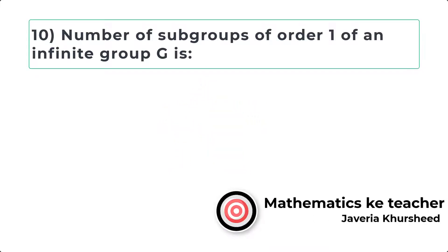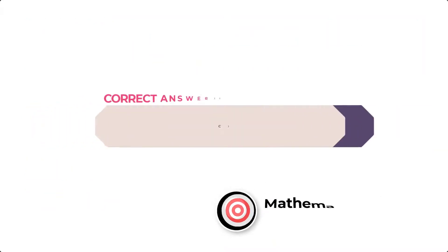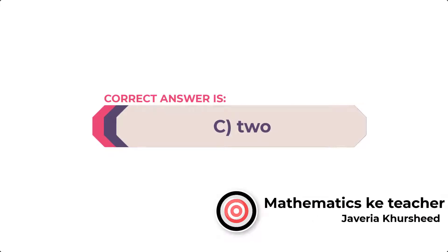Question 10: Number of subgroups of order 1 of an infinite group G is: A, 0; B, 1; C, 2; D, 3. Correct answer is C, 2.